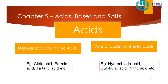Based on their source or origin, acids are classified into two types: natural acids or organic acids, and mineral acids or synthetic acids. Natural or organic acids originate from plants, animals, or from nature itself. Examples include citric acid present in lemon juice, formic acid present in ant bites, tartaric acid in tamarind, malic acid in spinach, and oxalic acid — all are natural acids.